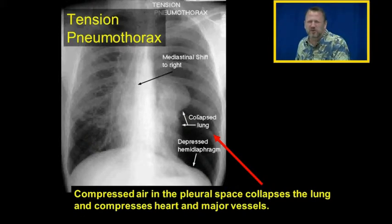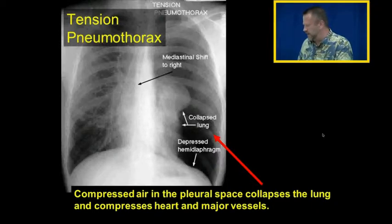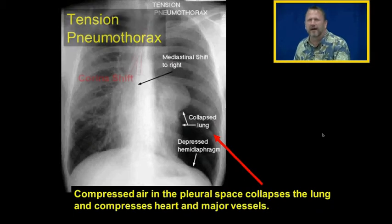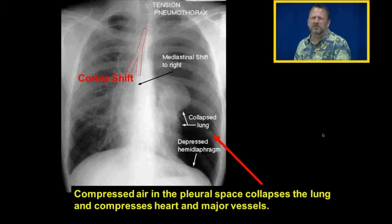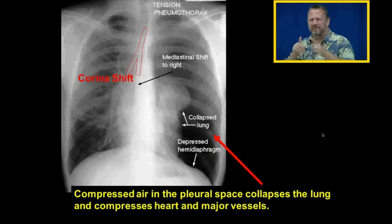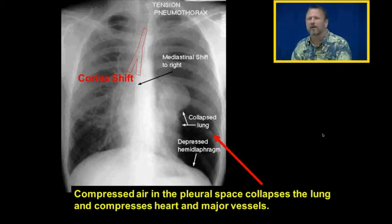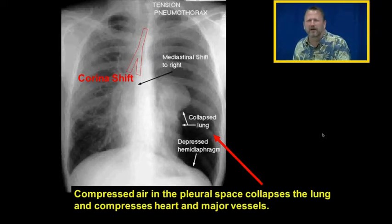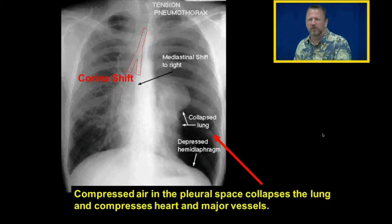With the compressed air in this pleural space collapsing the lung, it's also pushing the mediastinum into the other side of the chest. The mediastinum contains the heart and the major blood vessels. If you look very carefully at the x-ray, you can see a shift of the carina — the carina is where the trachea and the bronchi divide, visible as a little upside-down Y-shape on chest x-ray — and it has shifted to the opposite side of the tension pneumothorax.